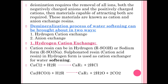Deionization requires the removal of all ions — both the negatively charged anions and the positively charged cations — so minerals capable of attracting both are required. These minerals are also known as the cation and anion exchange resins. These resins generally have a structure like molecular sieves, which are very small and white, and have the capacity of exchanging cations and anions. The impurities present in water get captured by these molecular sieves, and an equivalent amount of ions are released by the cation and anion exchange resins respectively.